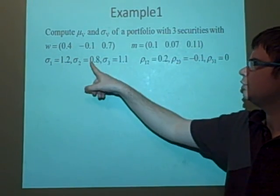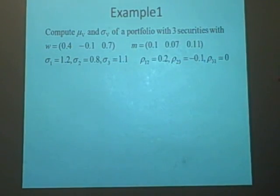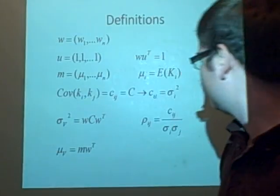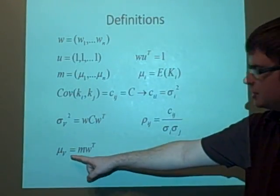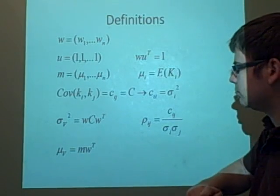We've got our returns as 0.1, and we've got our standard deviations as 1.2, 0.8, 1.1, and our correlation coefficients as 0.2, minus 0.1, and 0. So the first thing we're going to do - we're going to use this here, which is a nice easy one to calculate the return.